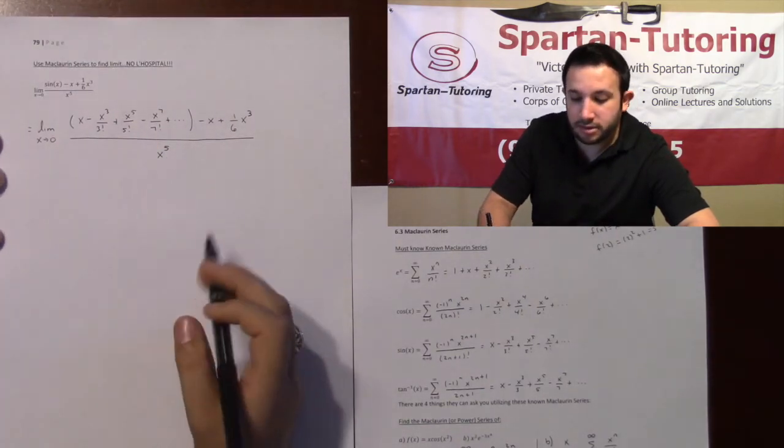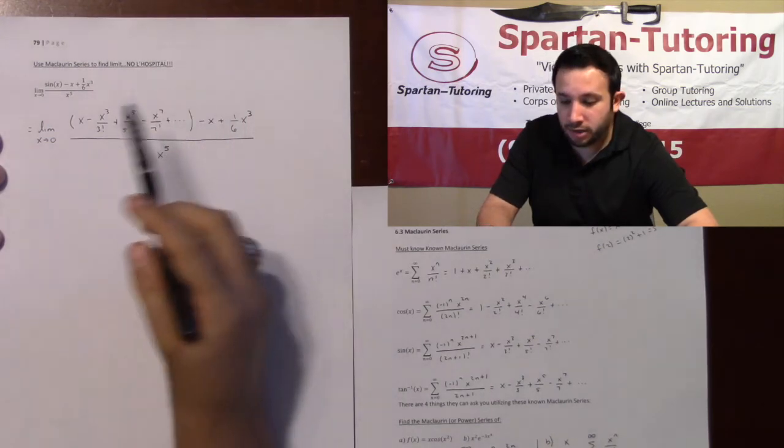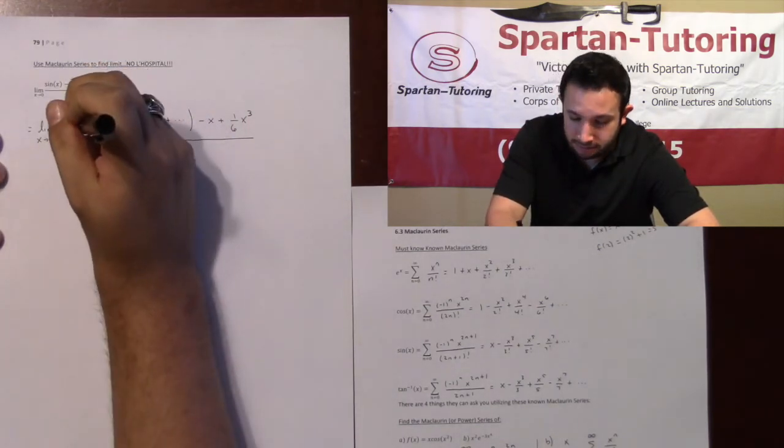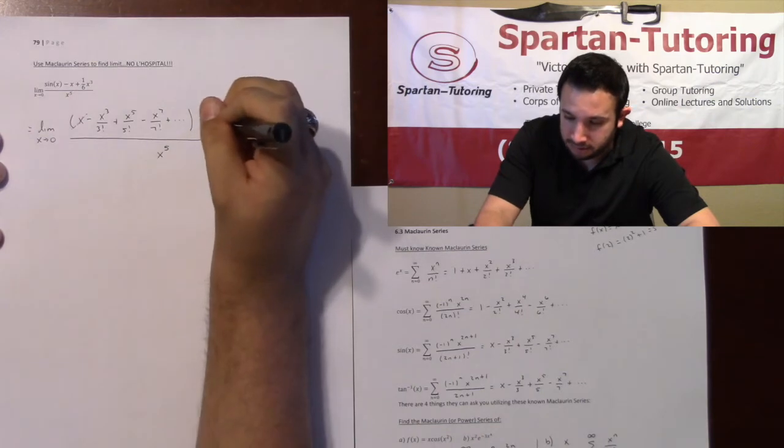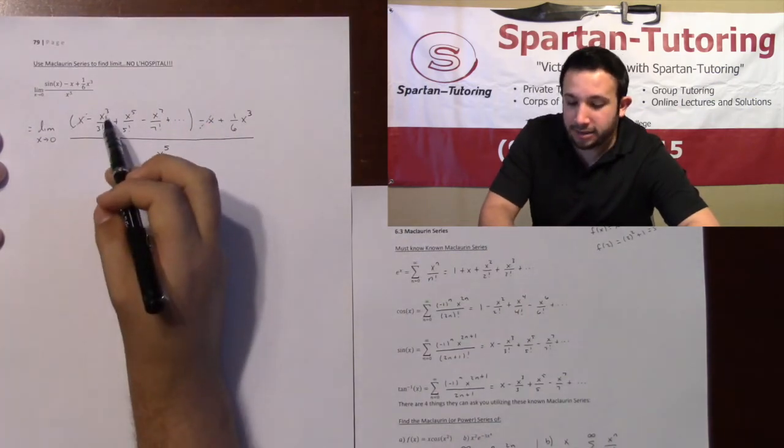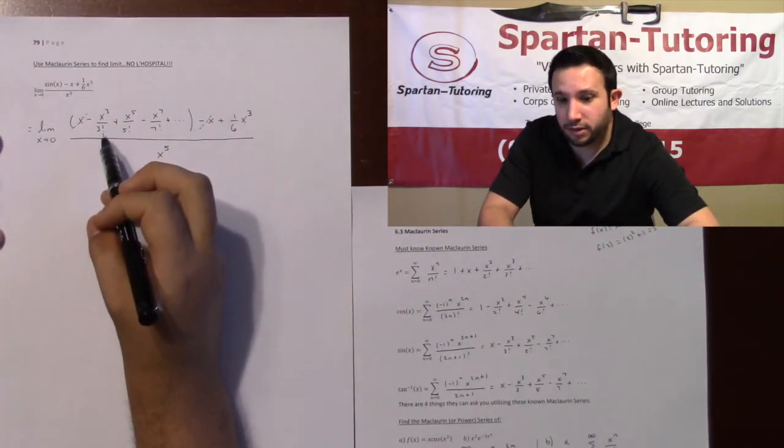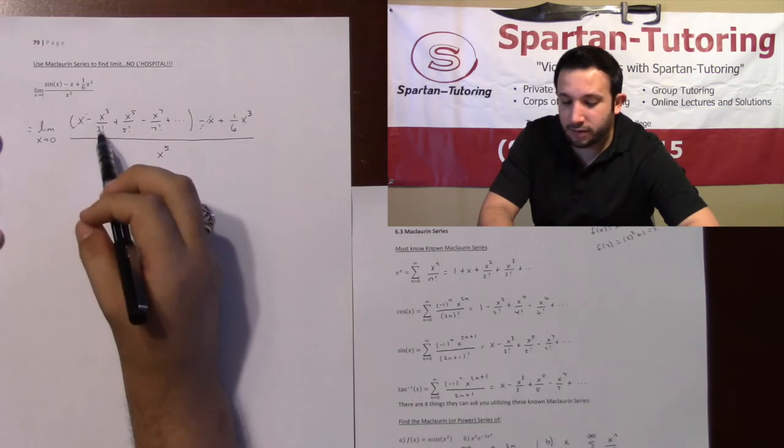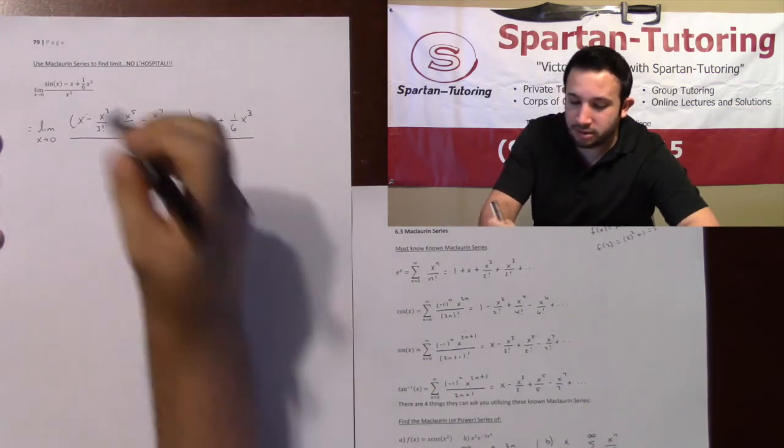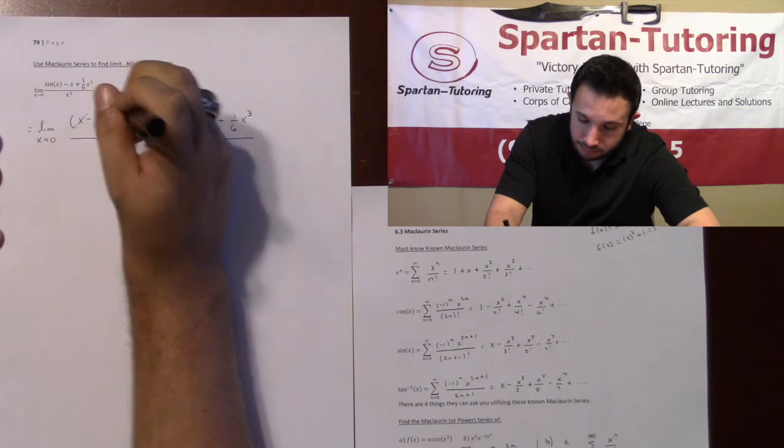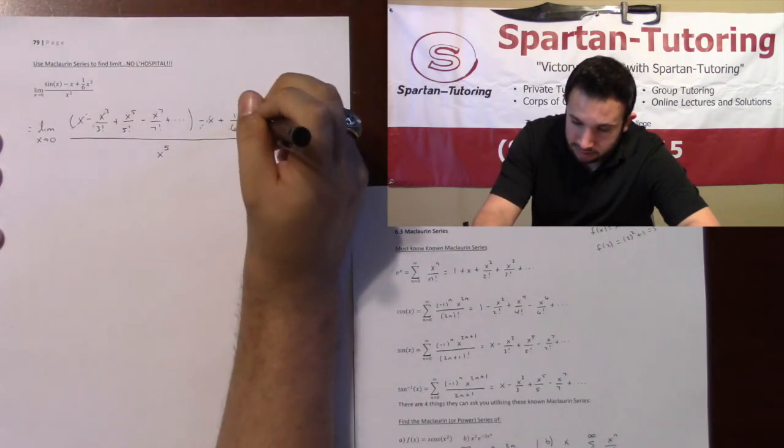At this point, several things should cancel. Notice an x and a minus x - that'll cancel. Check this: x cubed over 3 factorial, 3 factorial is 6. So negative x cubed over 6 and positive x cubed over 6 - these are going to cancel as well.